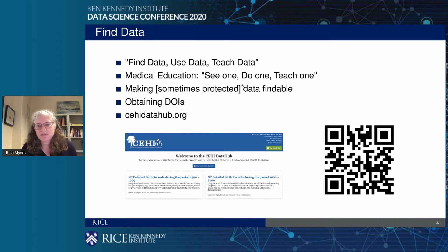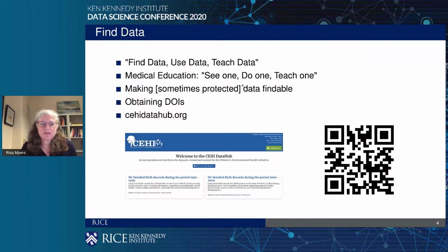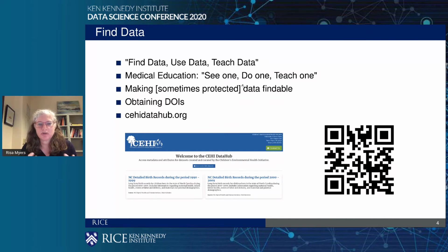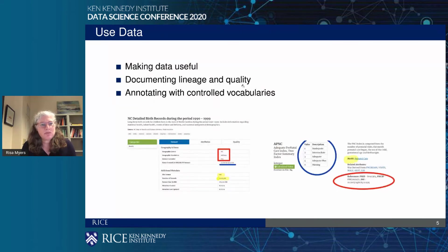For the CEHI research group, we've put together a data hub — cehidatahub.org. The group has probably a decade's worth of data sets that they've put together. We've been obtaining digital object identifiers for each of these data sets so they can be cited and found. We have a tile for each one explaining what the data set is about. We want to make this data useful for collaboration with other groups and within the group — so we're working on how to make more information about each data set available, and how to publish the metadata.